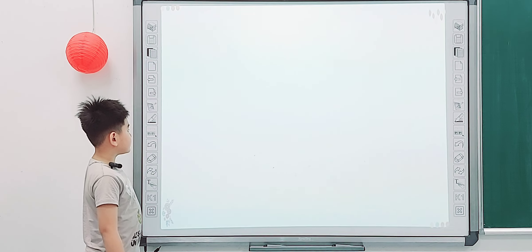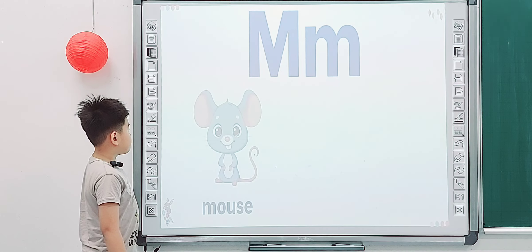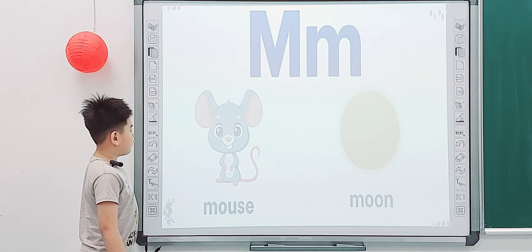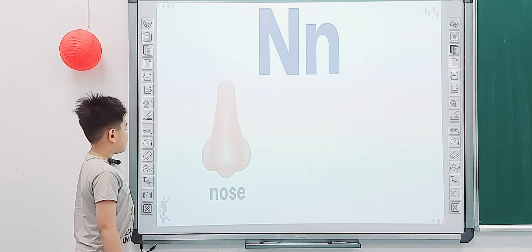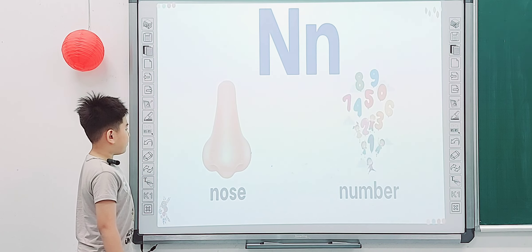We are getting this one. Part two, letters. Tell me, what is it? M. Tell me the word. Moon. Moon. Good, next one. What is it? N. Number. Good.